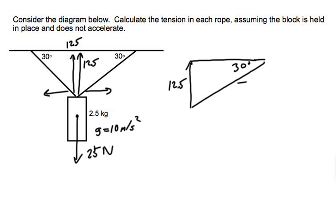And now this just becomes pretty much a trig problem. So if I say the sine of 30 degrees equals the opposite, which is 12.5, over the hypotenuse T, this is going to solve the tension of the rope for me.